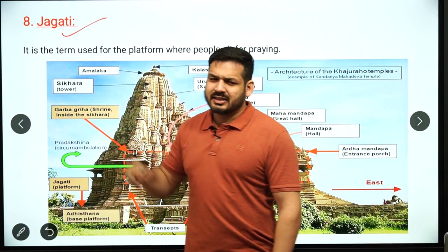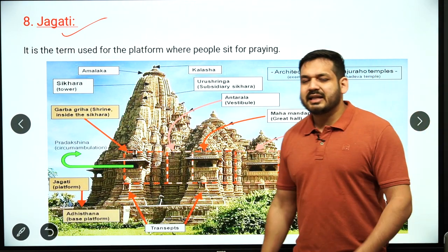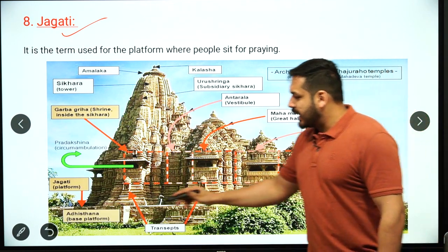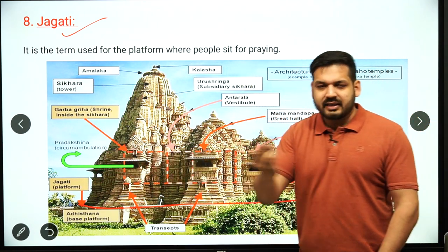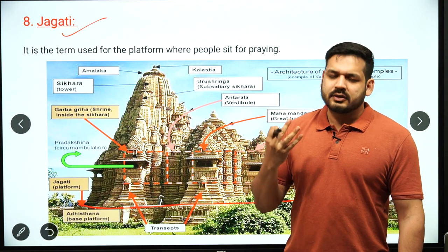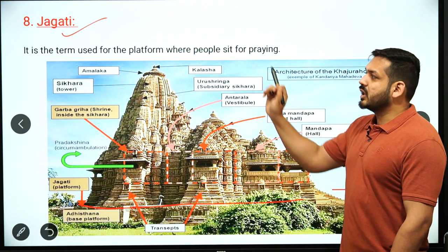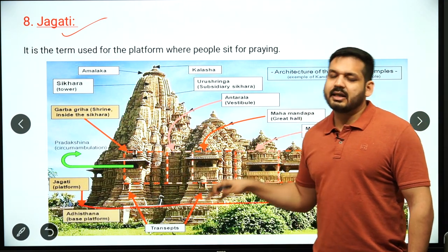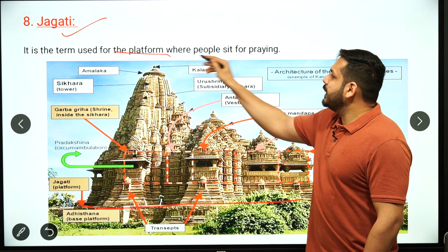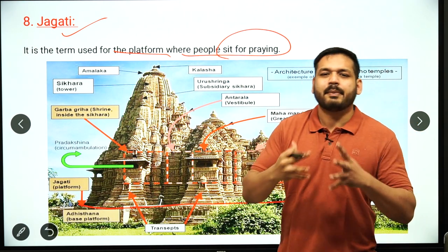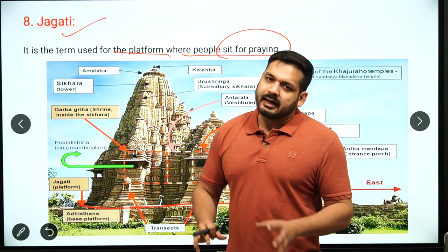The eighth feature is Jagati — the raised platform on which the temple is built and around which people walk. It is a term used for the platform where people circumambulate the temple during worship. One can see this in famous temples in Madhya Pradesh. People sit and pray, float around the temple — that platform is known as Jagati. These are the eight important features of Indian temples.